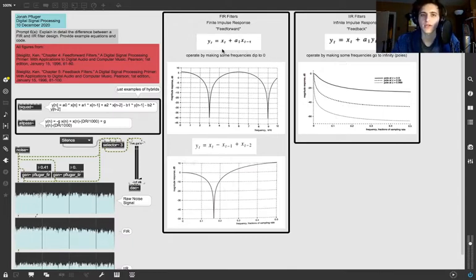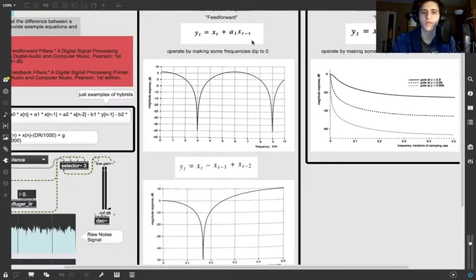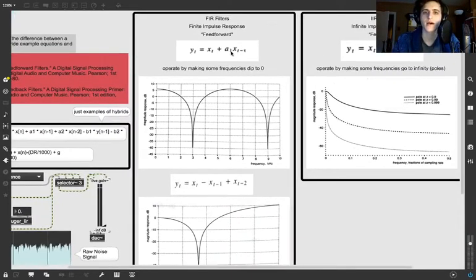Now, jumping back to FIR, we could see an example equation here. This is basically like the most simple FIR filter we could do. This is sort of like a comb filter style. So we have y of t, which is the output of the filter, equals x sub t, which is the current input, plus some gain coefficient. That's what this a sub 1 stands for. So plus a gain coefficient times x sub t minus 1, or the current sample minus some amount of time. Now, that's really the most straightforward example.